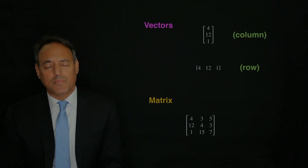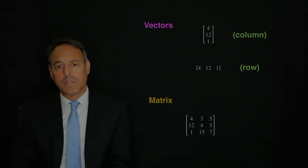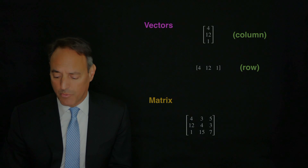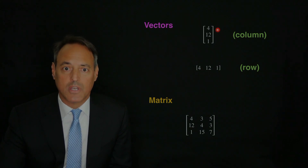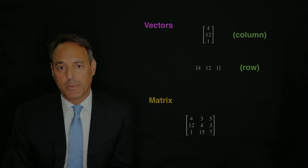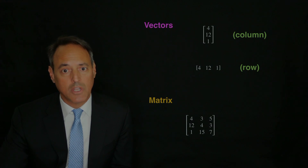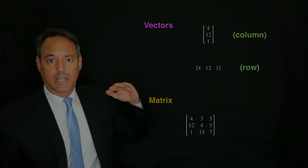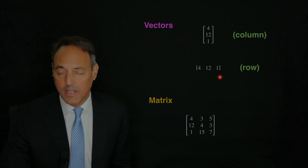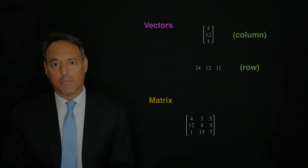Vectors and matrices are simply collections of numbers that we store and that we're going to be manipulating throughout our time in the course. We can start off with vectors, which is an arrangement of numbers. Here, for instance, is a column vector — it is a storage of numbers in a single column of data, three rows, one column. We can also think about a row vector, which lays out the data horizontally. And so whether you use row or column vectors is very context dependent, but we will be using both throughout the course.